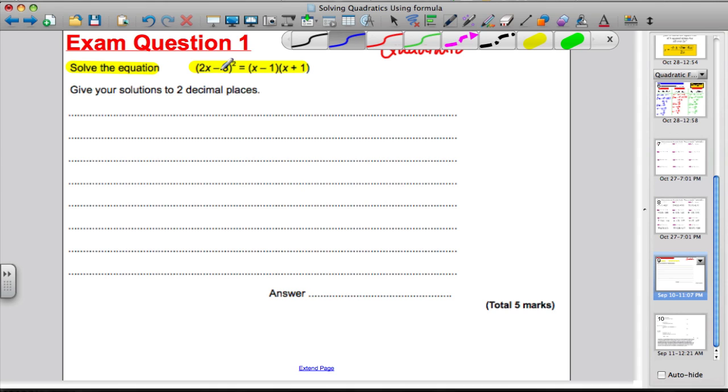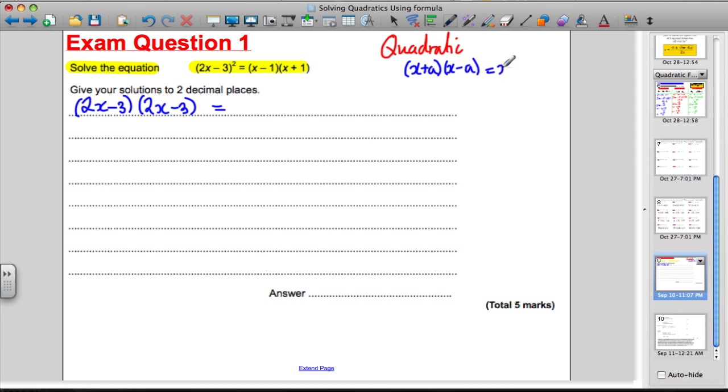2x subtract 3 all squared. That means 2x subtract 3 times 2x subtract 3. Now that's equal to x minus 1 multiplied by x plus 1. Hopefully you'll remember this is a difference of two squares. If ever you've got x plus a, a number, times x minus a, the answer is always x squared subtract a squared. So I can expand this quickly and say this must be x squared subtract 1 squared, which is 1.